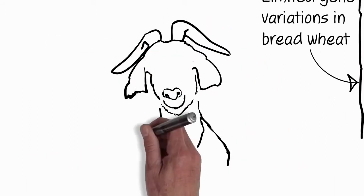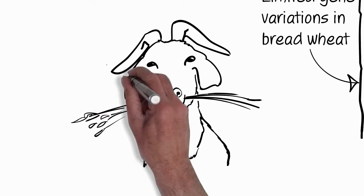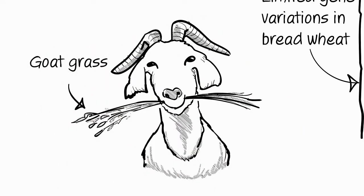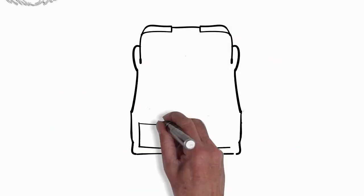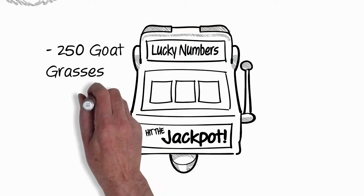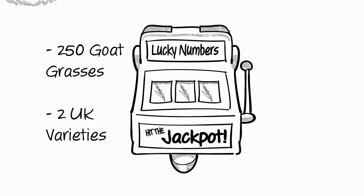So in order to bring in new versions of genes, we're looking at these goat grasses. It's quite a large scale project that we're undertaking here. There's around about 250 goat grasses and we're crossing to two UK varieties, so the scale of the project soon increases and the object is to bring in novel genes using conventional plant breeding methods.